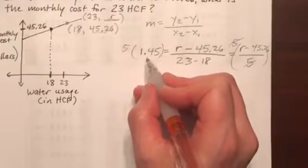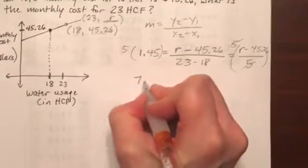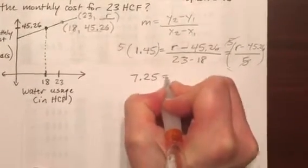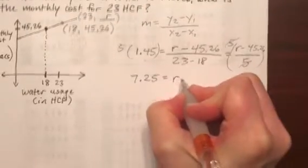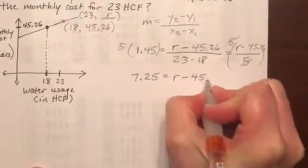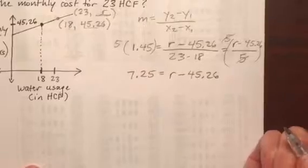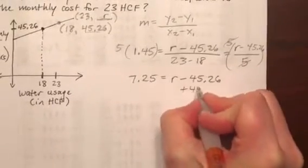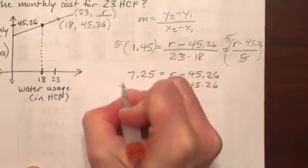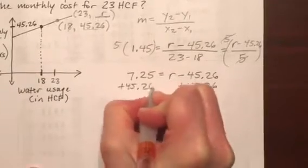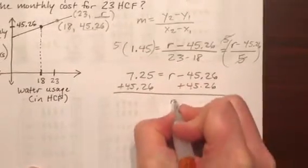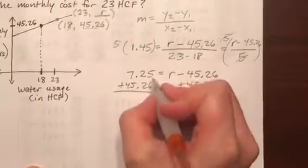And then 5 times 1.45 is 7.25 on the left side, leaving us with r minus 45.26 on the right side. If we just add that 45.26, we can see what our missing coordinate would be.